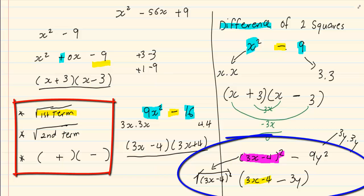Then we have done the root of the second term, which is giving us 3y. Then last we are putting it in the brackets, and one is minus, and one bracket is plus.